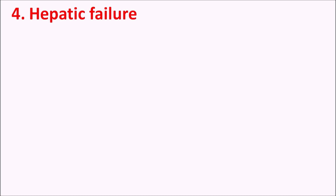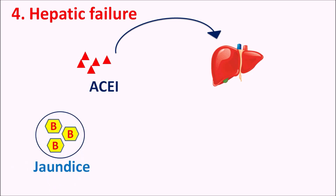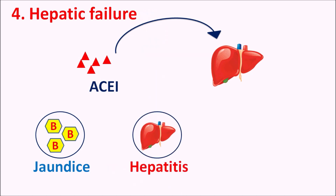The fourth side effect is hepatic failure. ACE inhibitors can affect the hepatic system and produce hepatic failure in patients with existing risk factors. When prescribed for longer periods, they can increase bilirubin levels, resulting in jaundice, or produce hepatitis. Liver enzymes and blood urea nitrogen may also be elevated. Hepatic function should be checked in patients with any risk of hepatic dysfunction.